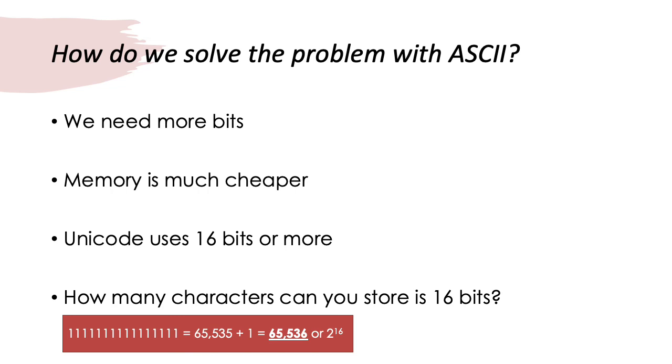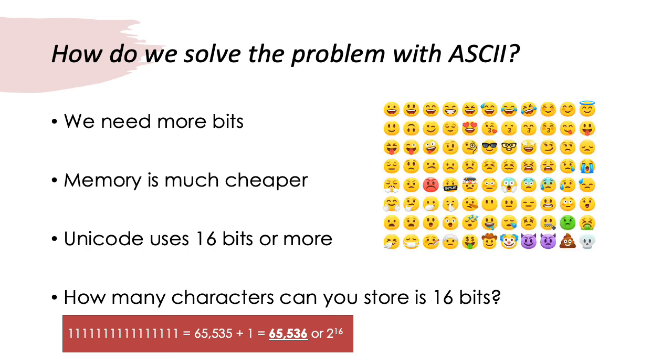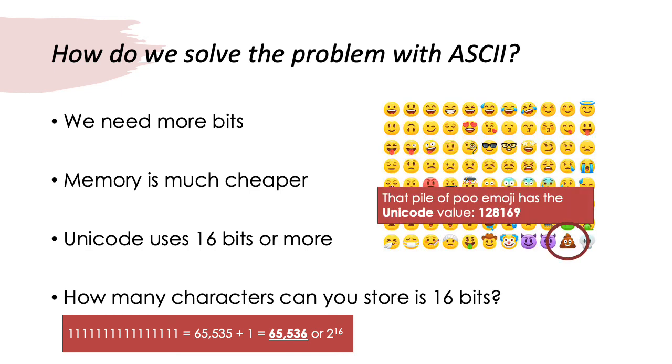2 because we're in binary. And 16 because we've got 16 bits. So, now we can store more characters because we've got more codes. We could deal with things like the emojis. And it's interesting to note that the poo emoji has the Unicode value 128169.